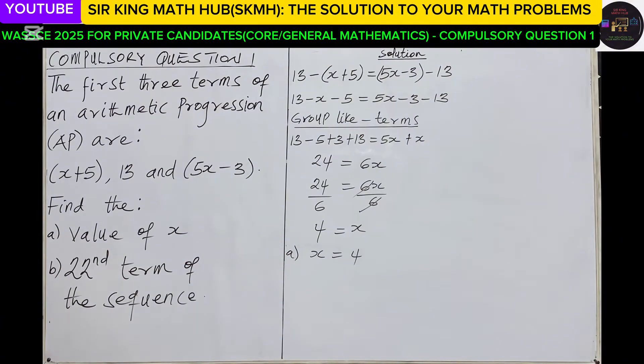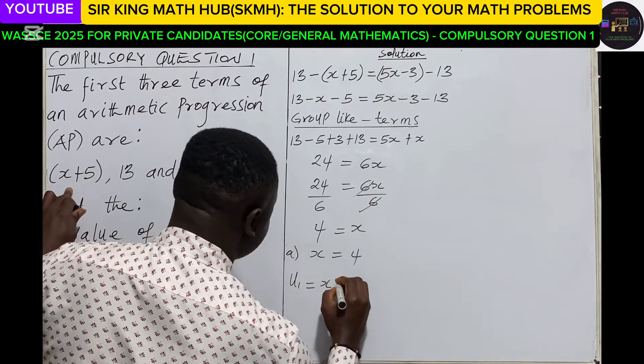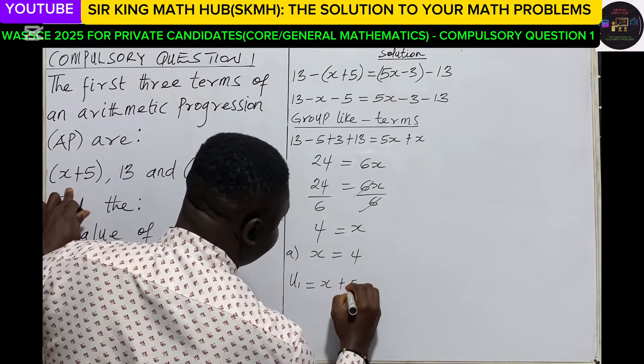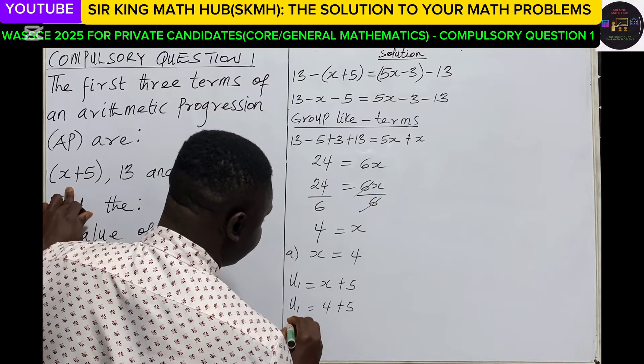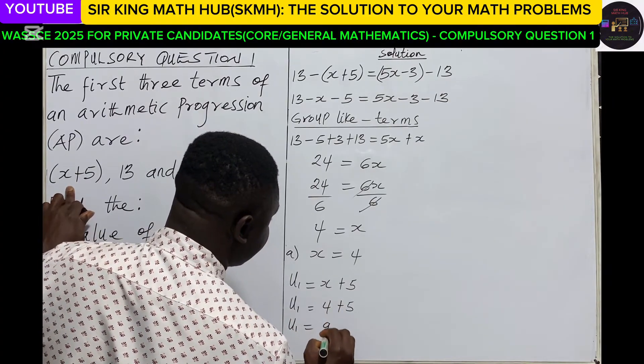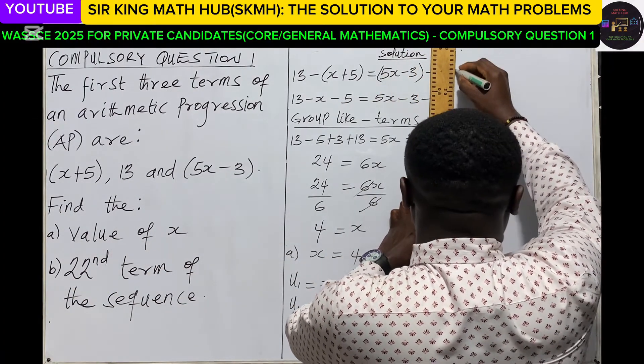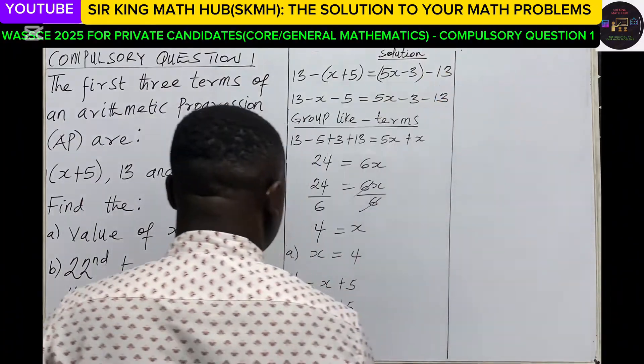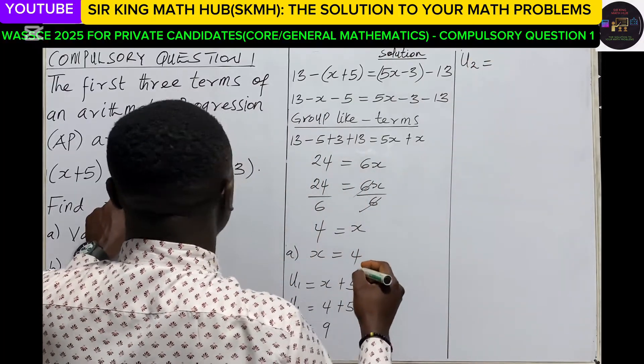Before we solve for the 22nd term, let's find the actual values of the terms. For the first term, this was the expression x+5. Now we know x as 4, so 4+5, meaning that the first term is 9. Now let's also get the second term. The second term was given as 13.